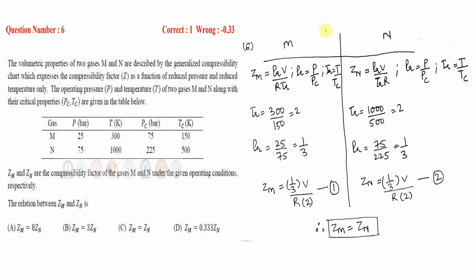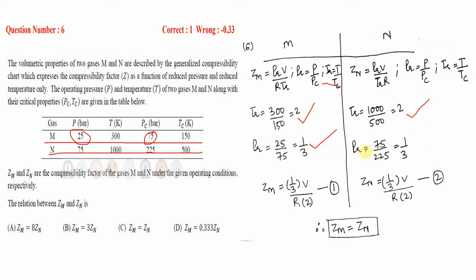For gas M, the temperature was 300 K and critical temperature is 150 K, giving reduced temperature of 2. The reduced pressure is 25 bar divided by 75 bar, giving 1/3. Similarly for gas N, substituting the values gives a reduced temperature of 2 and reduced pressure of 1/3. Since both gases have the same reduced temperature and reduced pressure, the compressibility factors will also be the same: Zm equals Zn. Option C is correct.